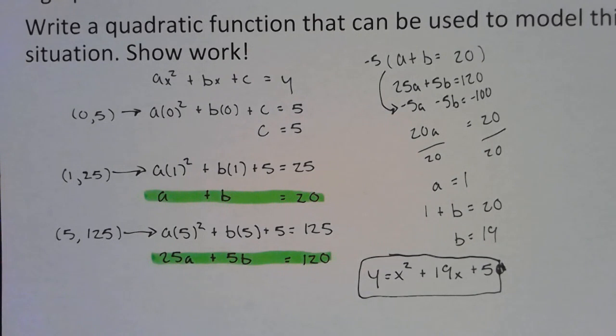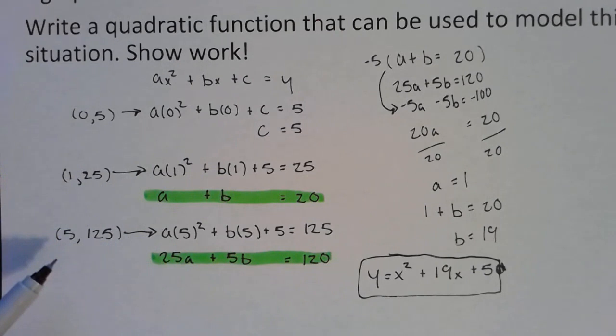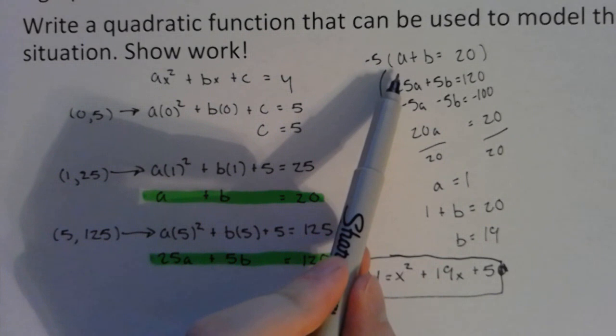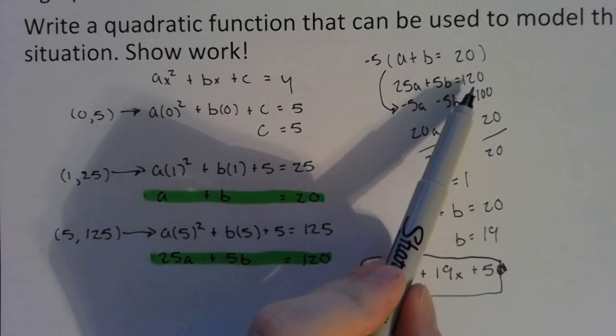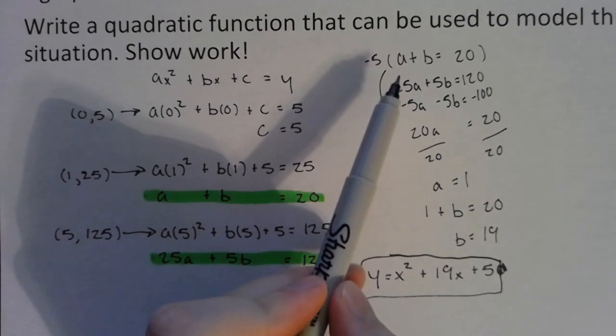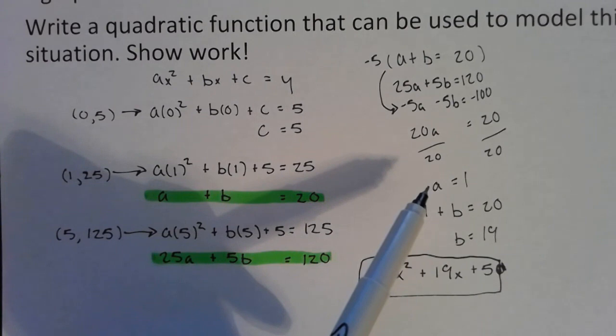All right, and here is my solution. Pause the video if you need to to look through all of my work. I tried to show as many steps as possible here. So there's your generic quadratic. I plugged in this coordinate to get the c value, and then I plugged in 1, 25 to set up this equation. I plugged in 5, 125 to set up this equation using that c value that we already have. From there I was able to set up this system: a plus b equals 20 and 25a plus 5b equals 120, which I solved using elimination. I multiplied this top equation by negative 5 to get this right here: negative 5a minus 5b equals negative 100. And I eliminated the b value. I got 20a equals 20. Divided both sides by 20. A equals 1.